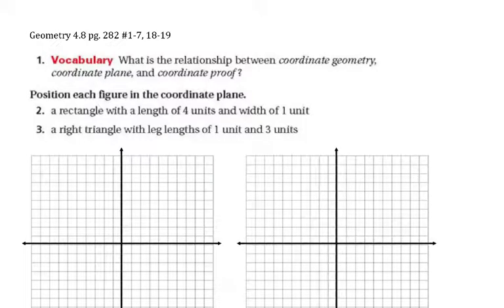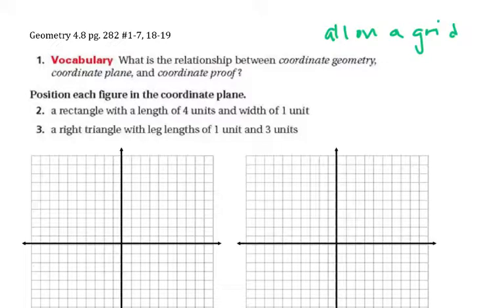Here we are with the 4.8 assignment on coordinate proofs. Our first question is: what is the relationship between coordinate geometry, coordinate plane, and a coordinate proof? They're all on a grid. Coordinate geometry means you're basically doing geometry but putting your figures on a coordinate plane, so coordinate geometry is figures on a coordinate plane.